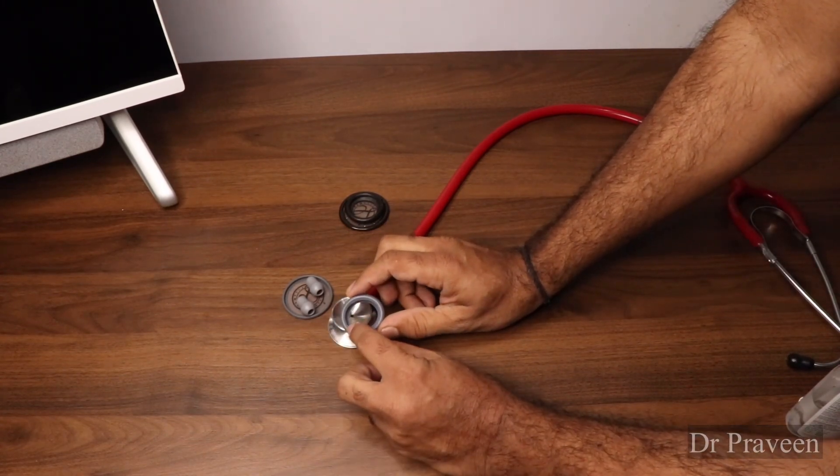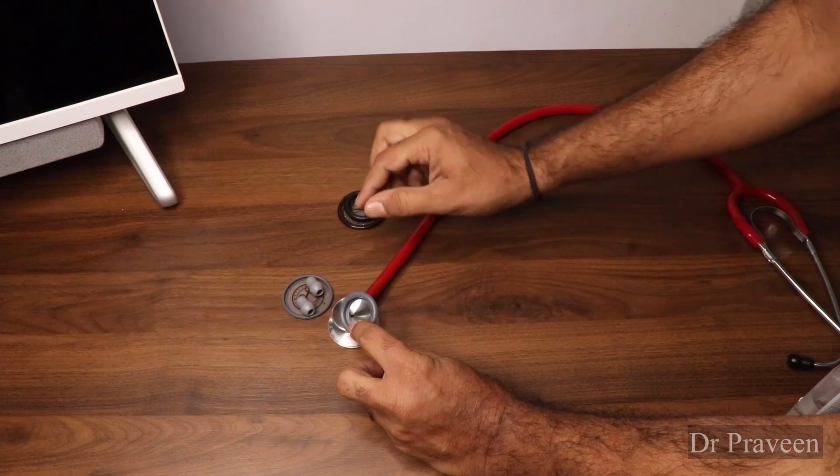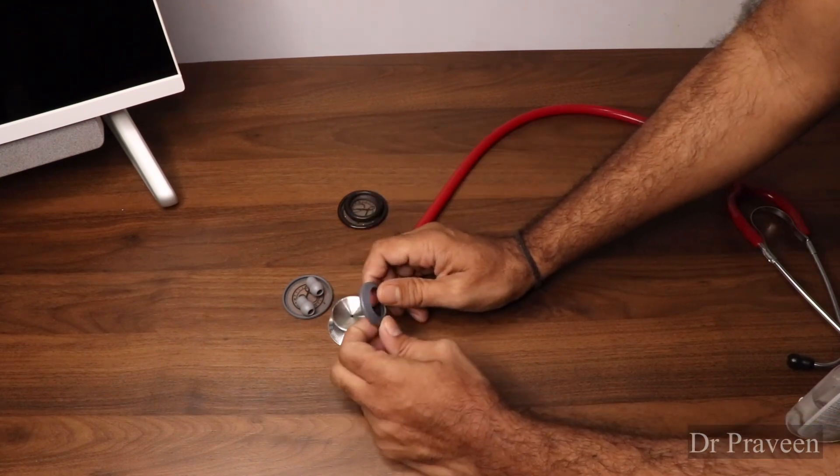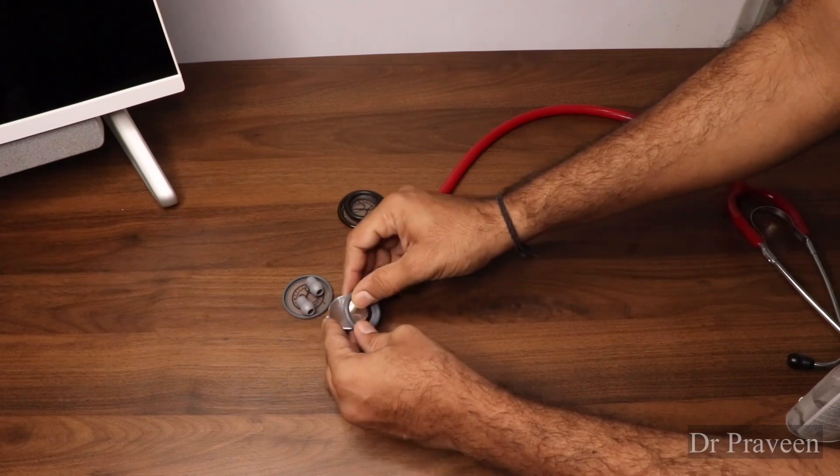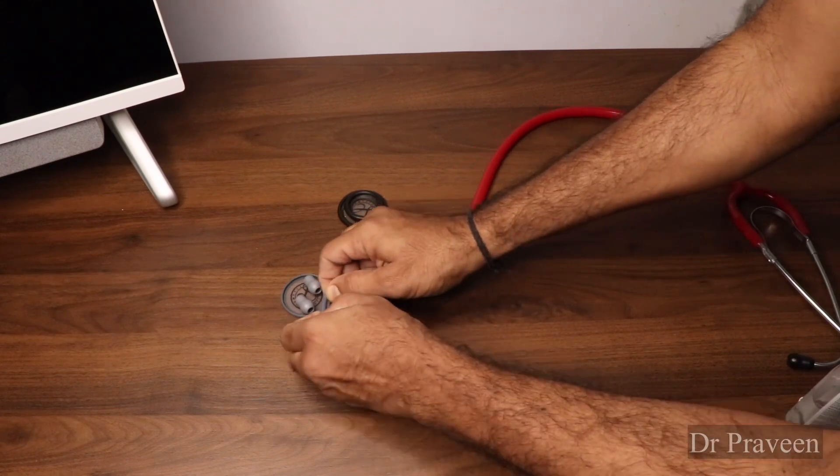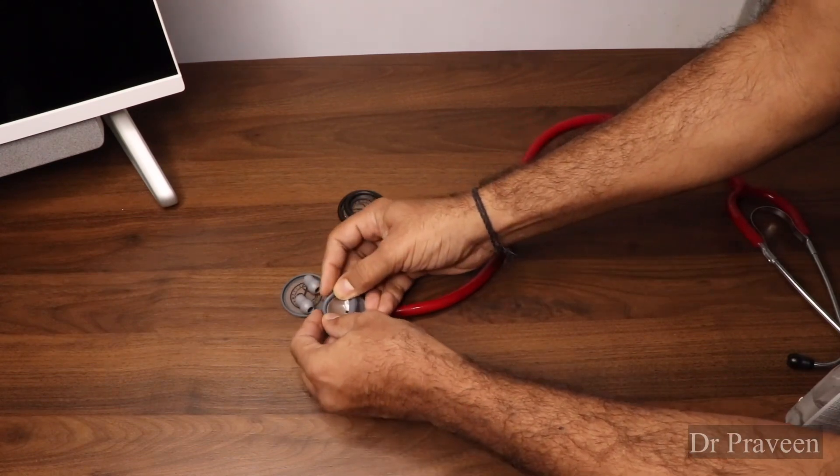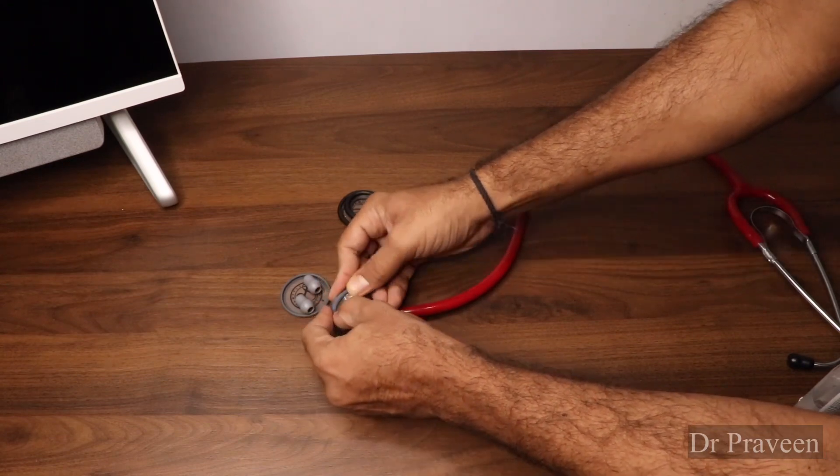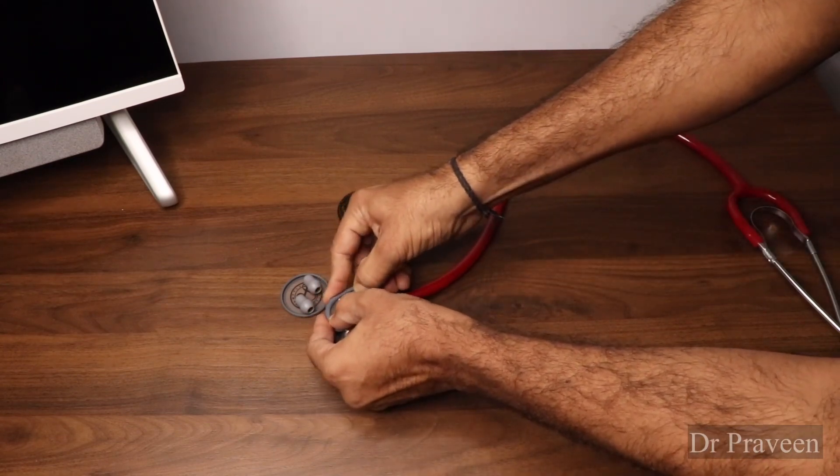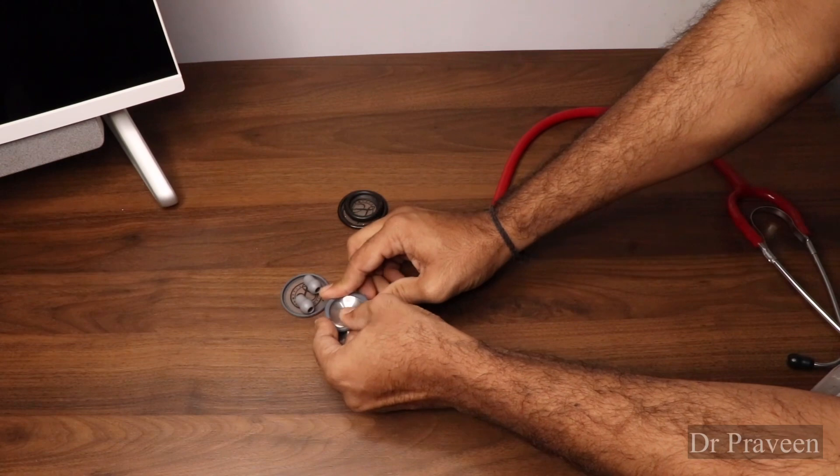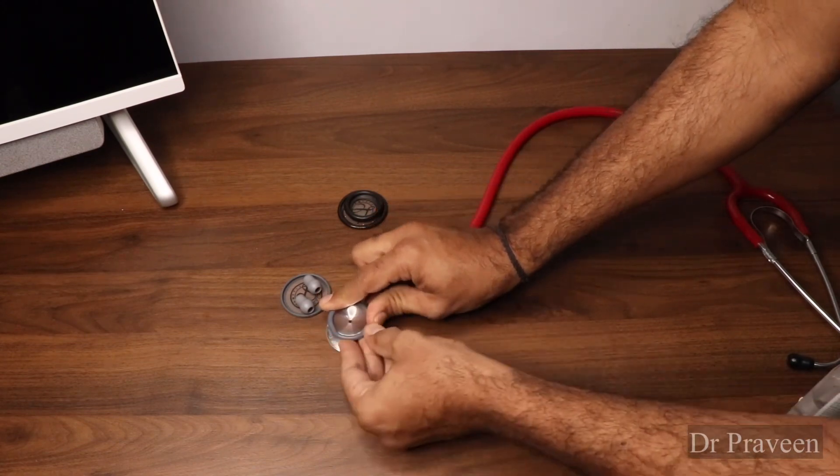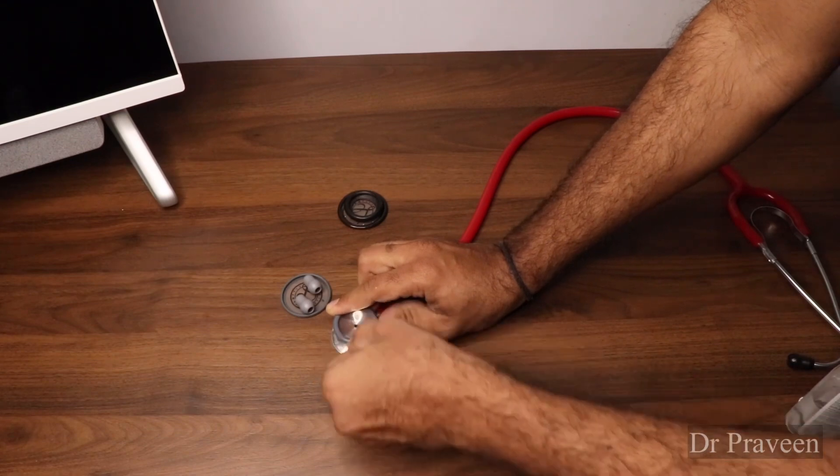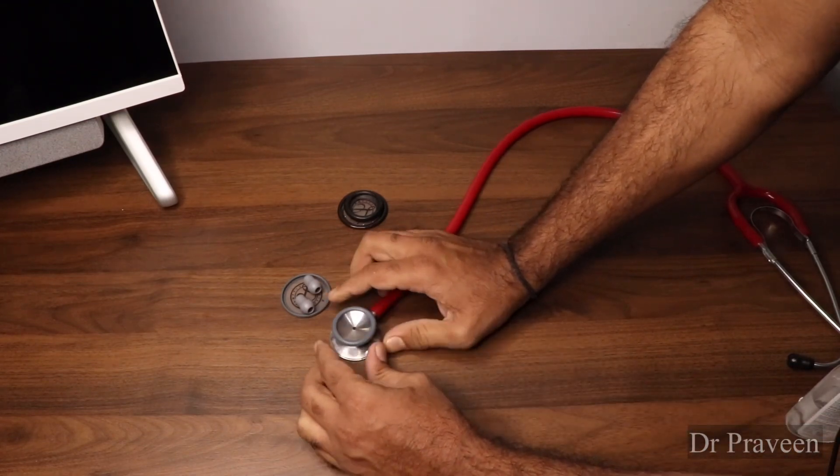The shorter one should come upward direction, the wider one should go on the back. Fine, so this is done.